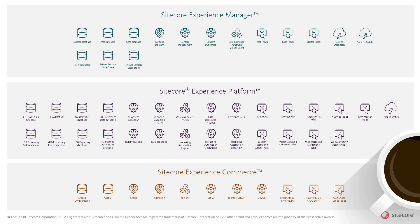To summarize, the Sitecore architecture is designed to scale the application to cover a wide variety of business requirements across the features provided by the Sitecore Experience Manager, the Sitecore Experience Platform, and the Sitecore Experience Commerce products. In the following parts of the video series, we'll examine the architecture of the Sitecore Platform more closely to describe the logical entities in the architecture, the data flow between the entities, and provide examples of the scalability of the platform.